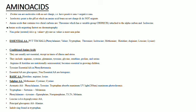Within essential amino acids, we have conditional amino acids. These are not basically essential but they become essential in case of certain illnesses and stress. These include arginine, cysteine, glutamine, tyrosine, glycine, ornithine, proline, and serine. Arginine and histidine are also semi-essential amino acids — they help in the growth of children. Essential amino acids are glucogenic in nature and non-essential amino acids are ketogenic in nature.